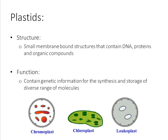Moving on to plastids, the last organelles in this first episode. Structurally, they are small membrane-bound structures containing DNA, proteins, and organic compounds — very similar to chloroplasts. In fact, chloroplasts are a member of the plastid family. Functionally, they contain genetic information for the synthesis and storage of a diverse range of molecules. Think of plastids as double-membrane structures holding important proteins that cells might not always need, or may need in times of particular stress.